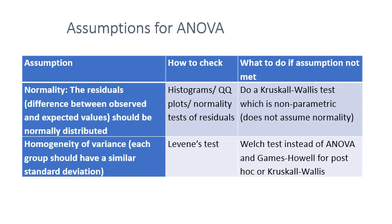The assumptions of ANOVA include normality — the residuals, which are differences between observed and expected values, should be normally distributed. If normality is not met, use the non-parametric equivalent: the Kruskal-Wallis test. For the assumption of homogeneity of variance, each group should have a similar standard deviation, tested using Levene's test. If assumptions are not met, use the Welch test instead of ANOVA and Games-Howell for post hoc, or use Kruskal-Wallis.